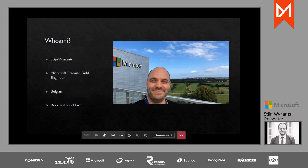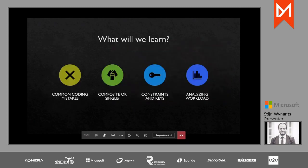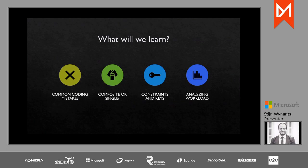Stan introduces himself as a Belgian PFE, former MVP, beer and food lover, and new father of two weeks. Today we'll learn about common coding mistakes in T-SQL code that prevent optimal index access, composite or single indexes, include fields, constraints and keys, and analyzing workloads — specifically how to see if your indexes are being used or are redundant.